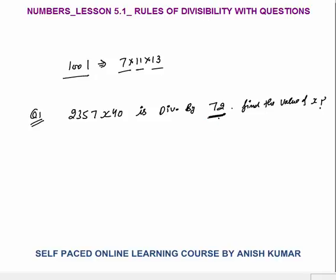For 72, we break it into co-prime numbers: 8×9, since their HCF is 1. It means if a number is divisible by 8 as well as 9, the number is divisible by 72. Since this number is given as divisible by 72, it must be divisible by both 8 and 9.